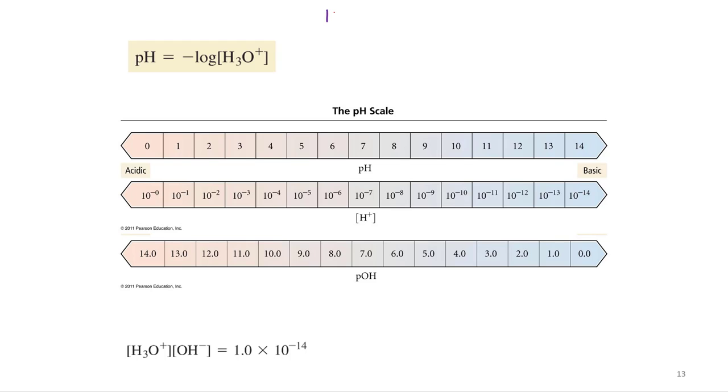So if pH is less than 7, that means you have a higher concentration of hydronium than hydroxide in solution. And of course, we call that acidic.